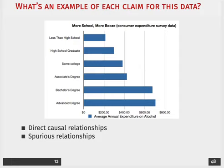The second type of relationship we mentioned was spurious relationships. Think about potential spurious relationships that are causally prior to someone receiving their education and their current spending on alcohol. That might be something along the lines of parents' education — the idea being that people with more well-educated parents are also likely to be more well-educated themselves, and people with more well-educated parents may be associated with higher levels of alcohol consumption in terms of amount spent.